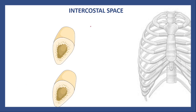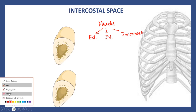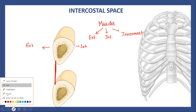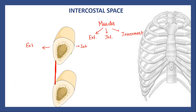Let us first learn about the muscles of the intercostal space. The muscles are three: external intercostal muscle, internal intercostal muscle, and innermost intercostal muscle. Let us see the arrangement of these muscles. I will draw the external intercostal muscle — this is the external aspect and this is the internal aspect. Now with light green I will draw the internal intercostal muscle, and finally with deep blue I will draw the innermost intercostal muscle.